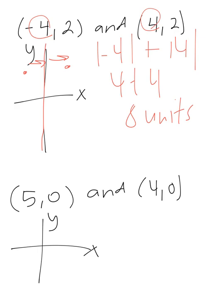The bottom one: we have (5,0) and (4,0). Again, the y-values are the same, so we're looking at the x's for the horizontal difference. We have over 5 up 0 and over 4 up 0. So we take the absolute value of 5 minus the absolute value of 4 — that's 5 minus 4, which is 1 unit. To know whether to add or subtract, think about whether you are crossing over one of the axes. If you're crossing over an axis, you add; if not, you subtract.